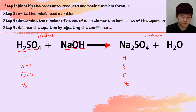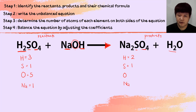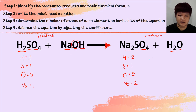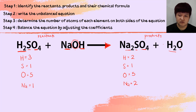On the product side, using the same element order — hydrogen, sulfur, oxygen, sodium: hydrogen = 2, sulfur = 1, oxygen = 4+1 = 5, sodium = 2. Since oxygen exists in H₂SO₄, NaOH, Na₂SO₄, and H₂O — it is present in every compound — oxygen will be the last element we balance.